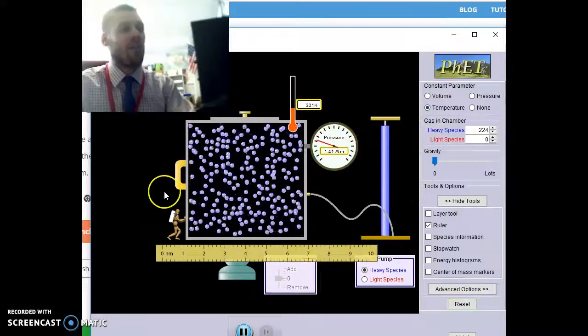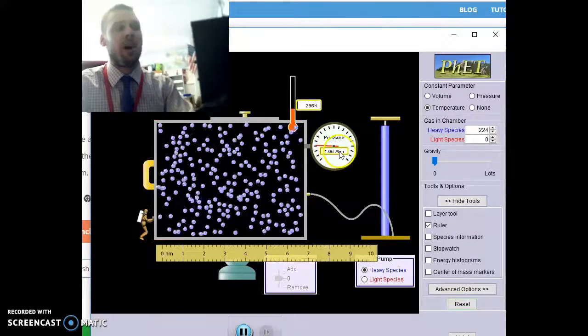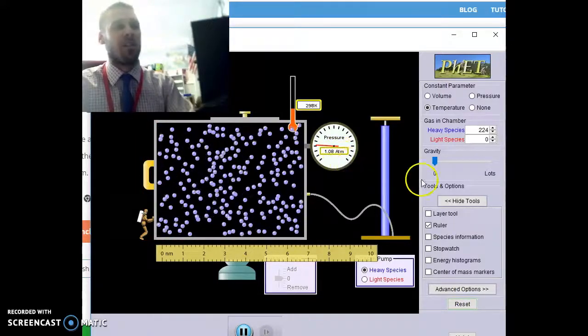So for this second graph, the volume, that's what we're changing. That's the independent variable. What we're measuring, the dependent variable, is going to be the amount of pressure in that system.